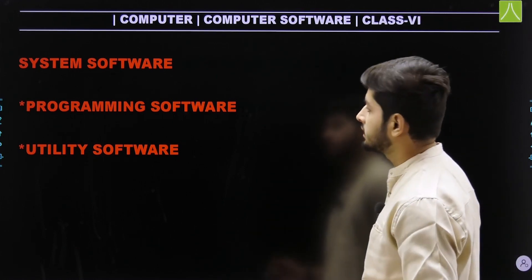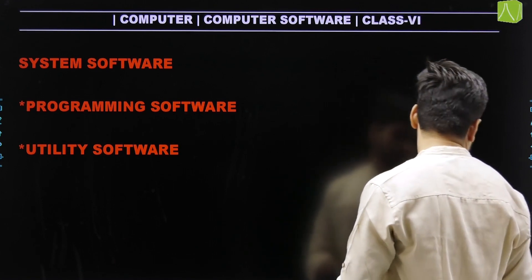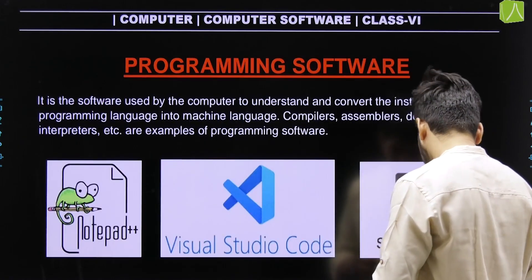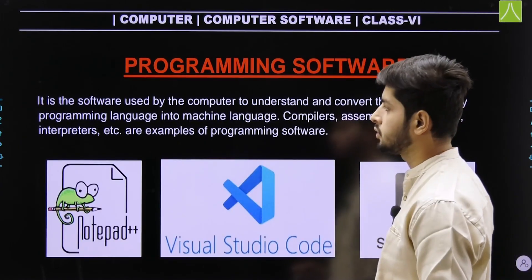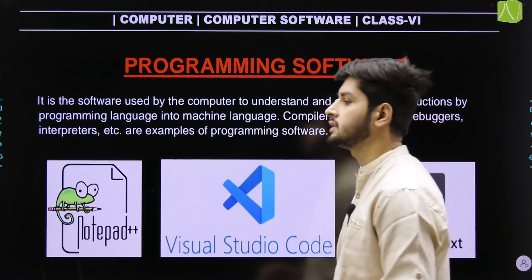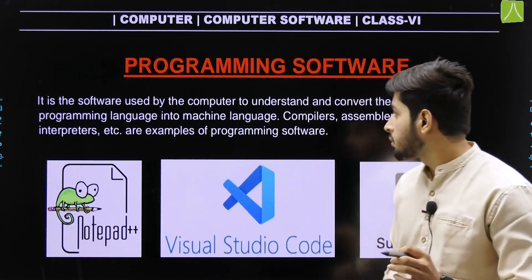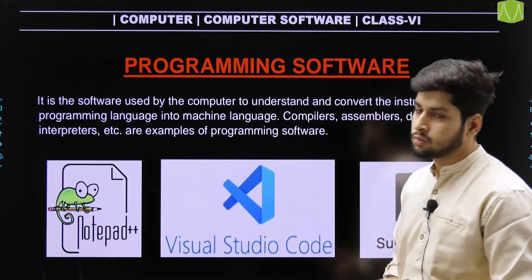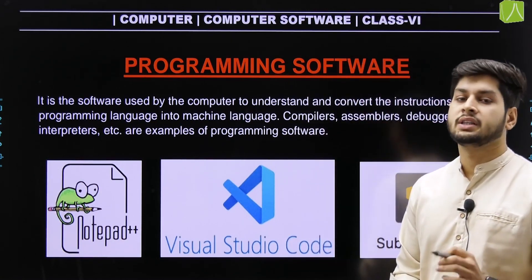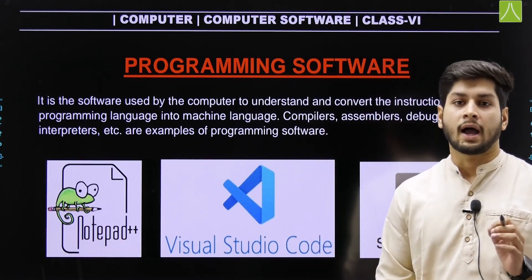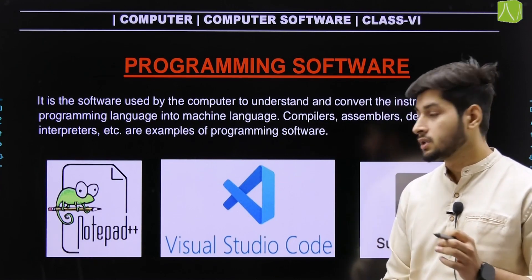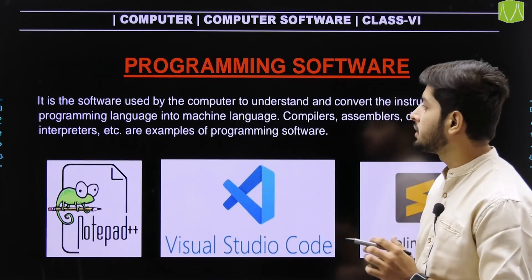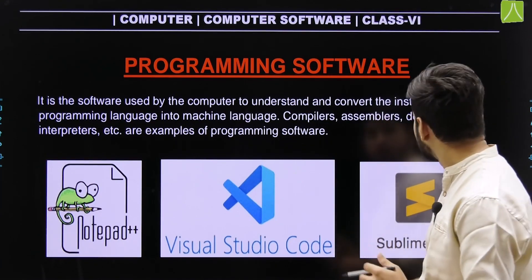Now, what is programming software? A programming software is a kind of program that is used to convert high-level language into machine language.